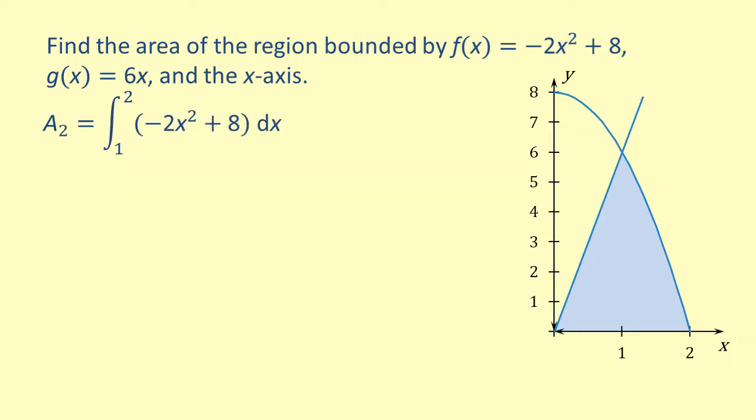Next, we can find the area of the region from 1 to 2 by integrating f of x from 1 to 2. Integrating, we get negative 2x cubed over 3 plus 8x from 1 to 2.